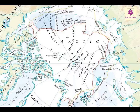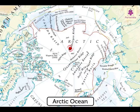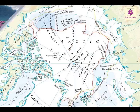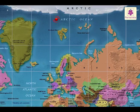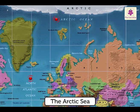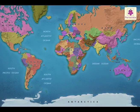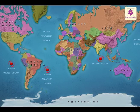A small fourth ocean is known as the Arctic Ocean. But many geographers consider it as a part of the Atlantic Ocean and call it the Arctic Sea. Similarly, at the southern end of the Earth, the Pacific, the Atlantic and the Indian Oceans meet around the continent of Antarctica.